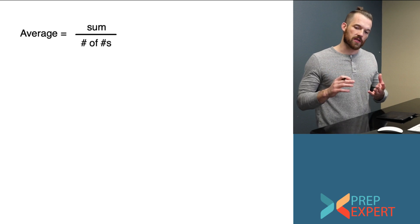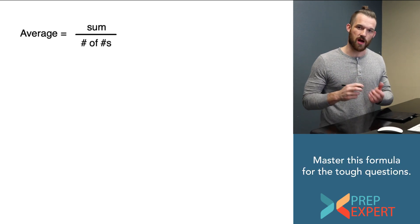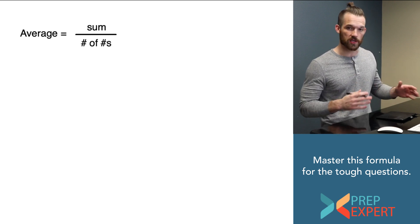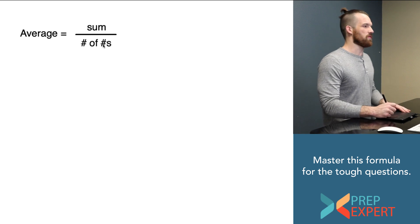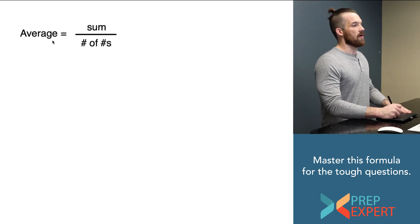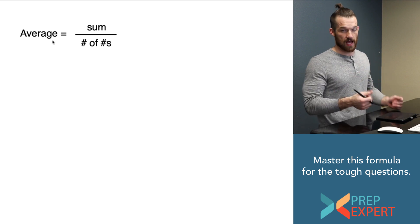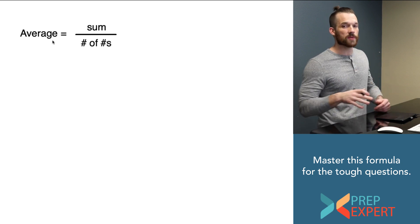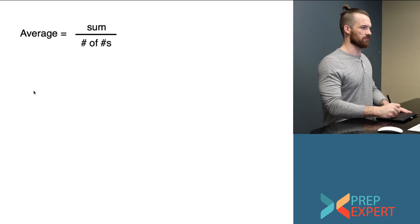It helps to have a regular, consistent approach in how we attack average problems. It helps to have a formula that we can always rely on to help us solve average problems. So let's take a look. This is the formula I use. Average equals sum over number of numbers. Now again, I'm not giving you this formula because I think you don't know how to find an average. I'm sure you do. I'm giving you this formula because if you master using this formula, it can help you on even difficult average problems.